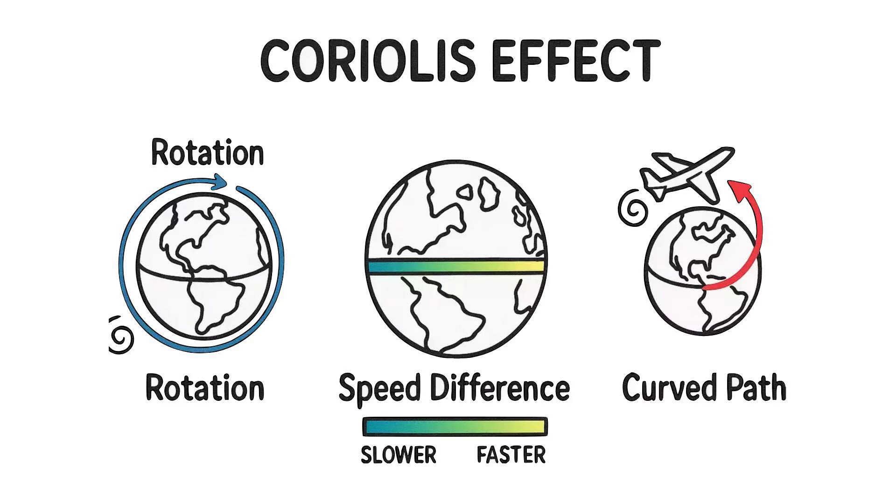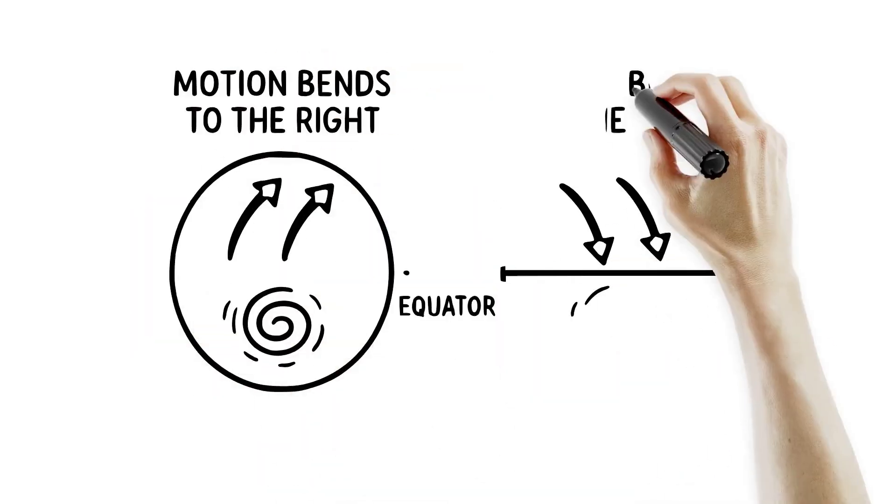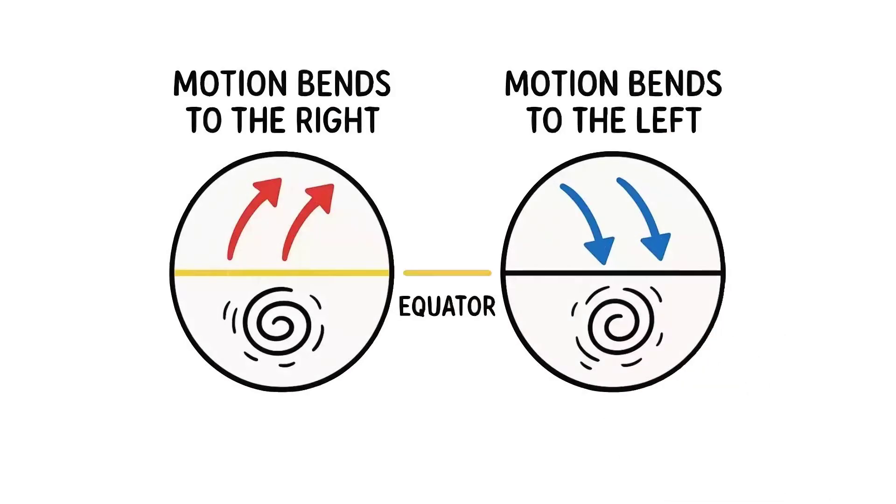In the northern hemisphere, motion bends to the right. In the southern, it bends left. This consistent pattern explains why cyclones rotate counterclockwise up north, but clockwise down south.